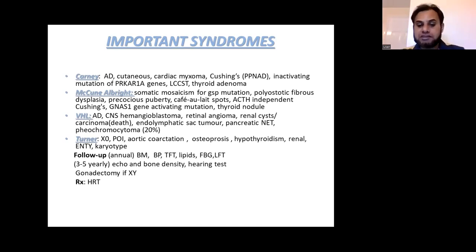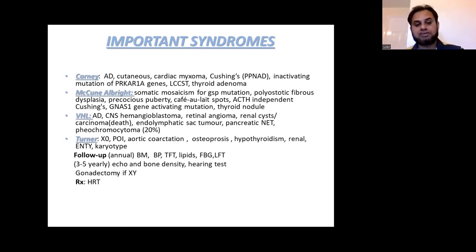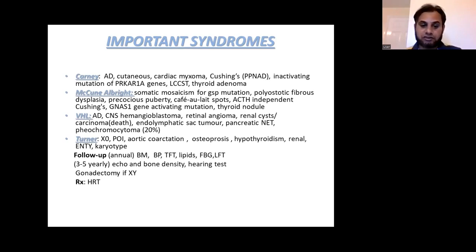For follow-up surveillance, we check BMI, BP, TFTs, lipids, fasting blood glucose, and liver function tests, plus three- to five-yearly echo, bone density, and hearing test. An important aspect of Turner syndrome is knowing when to go for gonadectomy: if the genotype shows XY, that is when gonadectomy is needed. An easy way to remember is that if a female with Turner syndrome has an XY genotype resembling male, it is more dangerous. Similarly, if someone has Klinefelter syndrome but with an XX genotype, they have mixed gonadal dysgenesis and will also need gonadectomy.